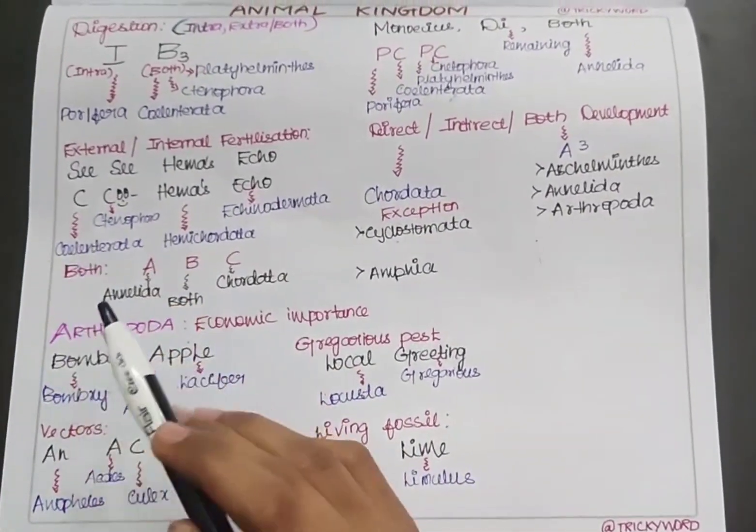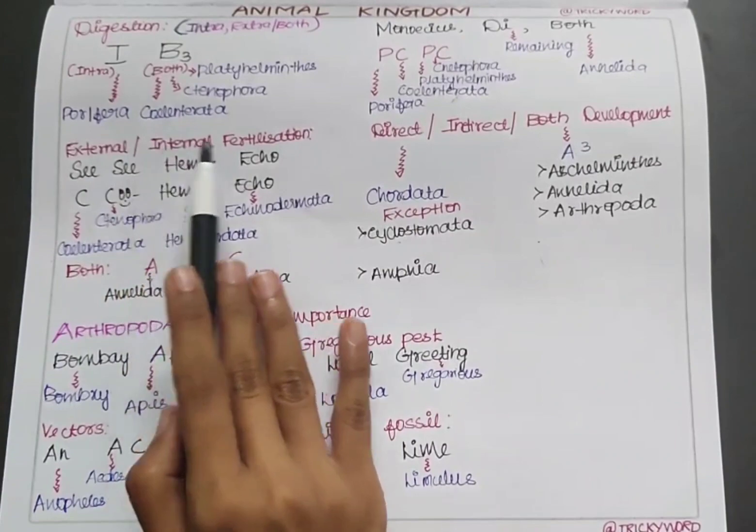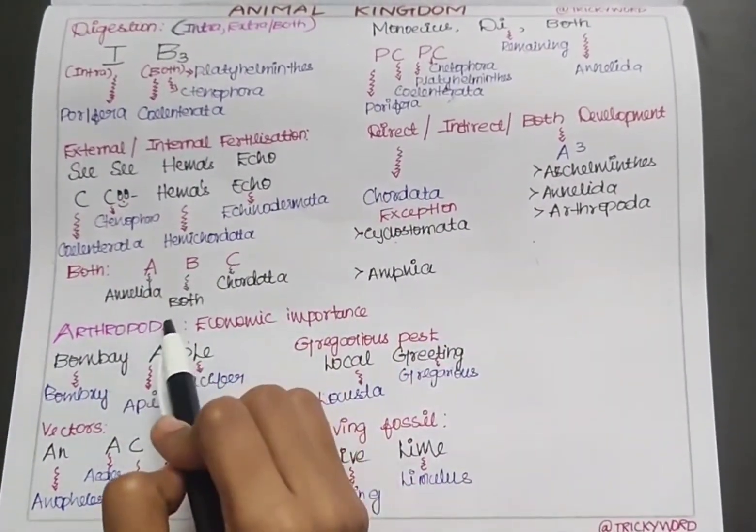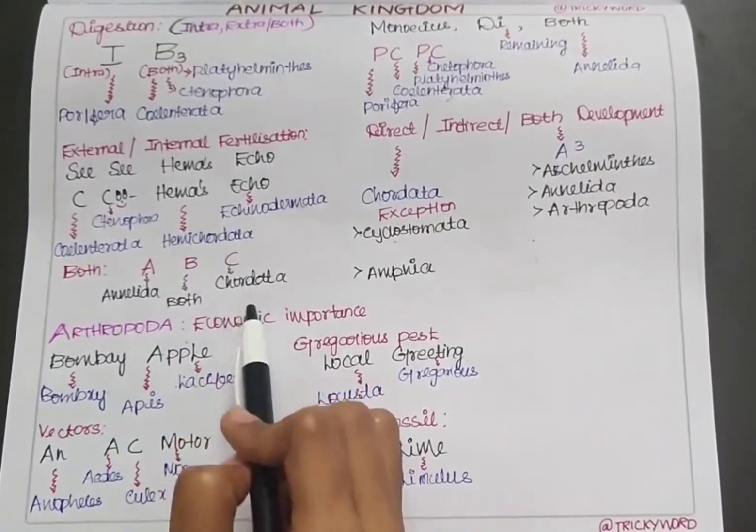The next example: organisms showing both external and internal fertilization are given by ABC. A is for Annelida, B is for both, and C is for Chordata.